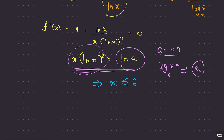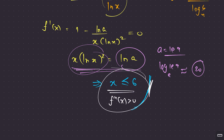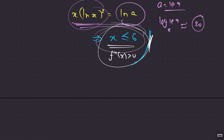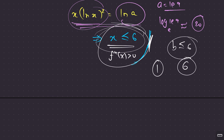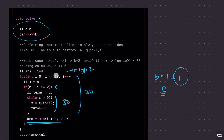Also, since F''(x) > 0, the critical point is confirmed to be a minimum. All in all: the optimal new value of b is at most 6, meaning you never need more than 5 or 6 type 2 operations. That's why in the code, even writing the loop limit as 6 or 7 works — we use 10 for safety. That's the complete explanation — see you in the next one.